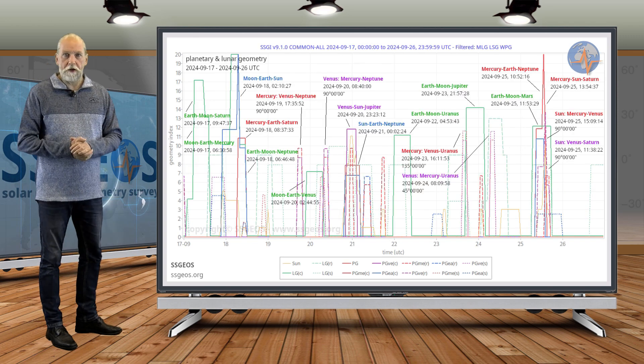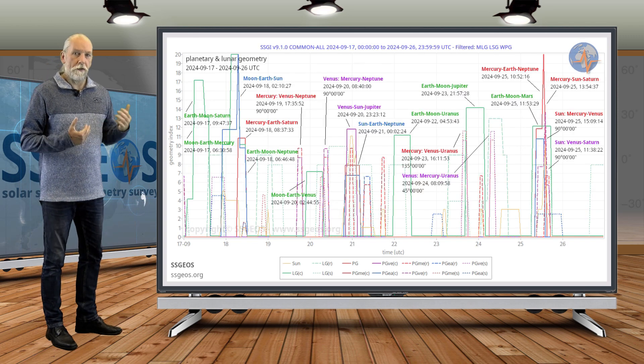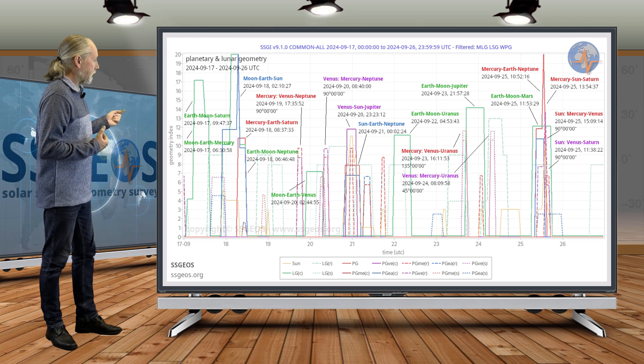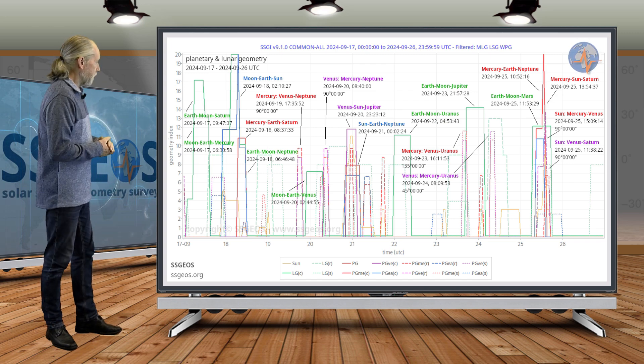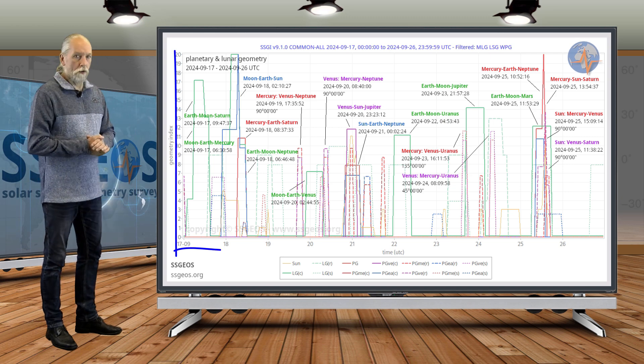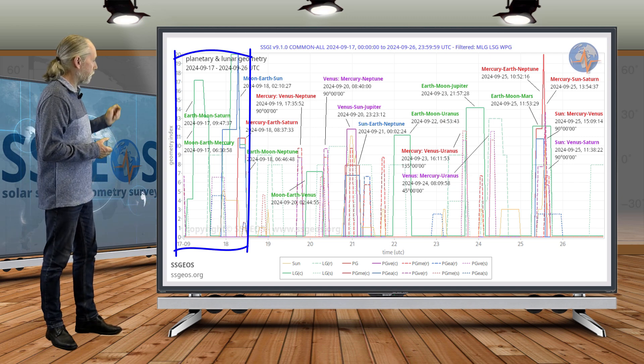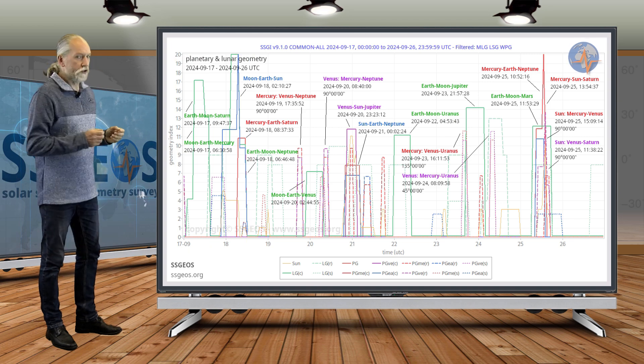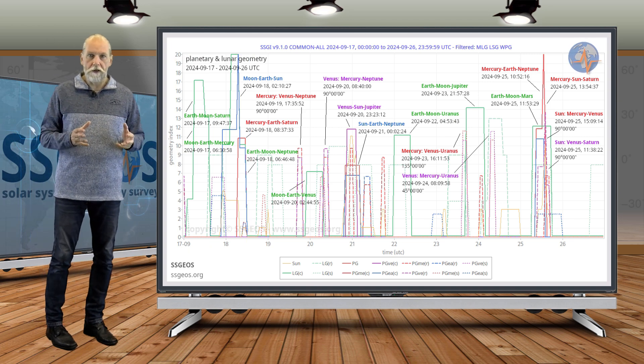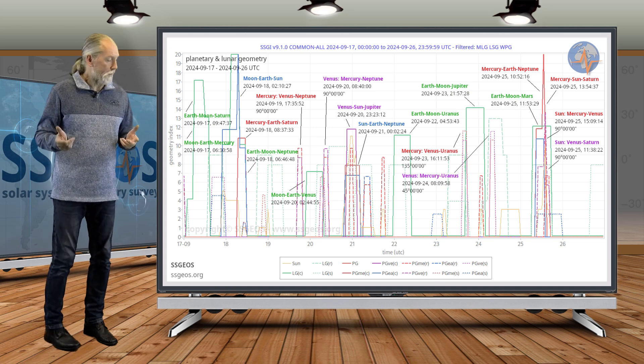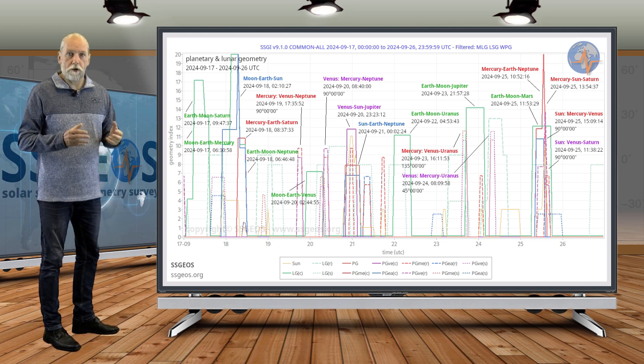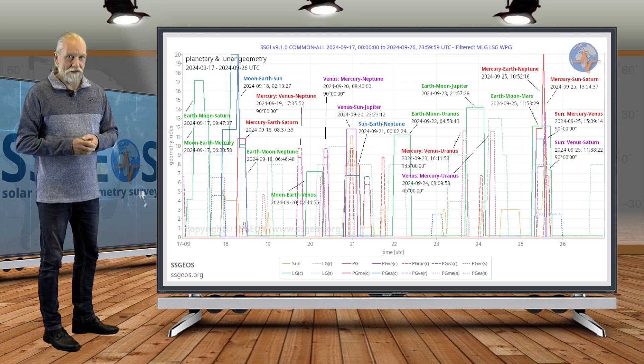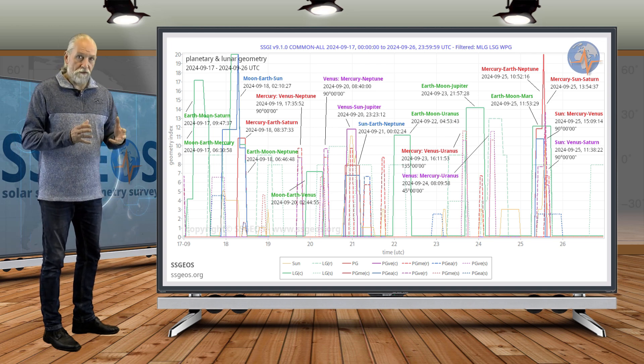So let's have a look at the SSGI graph for the coming time frame. That is not going to look all that much better to be honest. We have a full moon tomorrow and we have a high lunar peak today. This is because Earth is moving between Mercury and Saturn, and the moon is aligning with Mercury and with Saturn almost at the same time, shortly before the full moon.